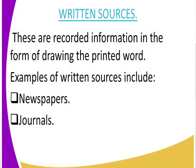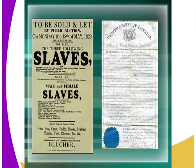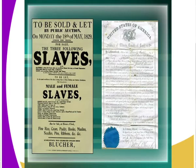Examples of written sources include newspapers and journals. A journal is documented written information — unlike the unwritten source, which was not documented. A journal is a collection of many printed articles, unlike a newspaper. So there is a difference between a newspaper and a journal. Those are examples of written sources of information.